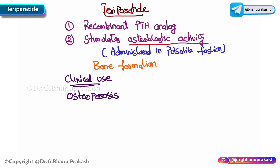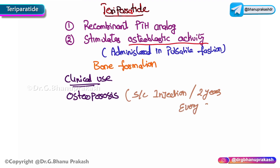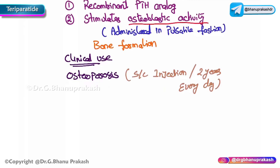In osteoporosis, the administration is in the form of a subcutaneous injection, given every day. It is most often limited to two years of therapy, mainly due to potential risk factors.